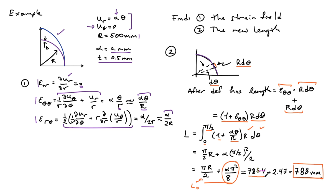The original length was 785 and 0.4. So there's about a two and a half millimeter lengthening of the band when it undergoes this deformation.